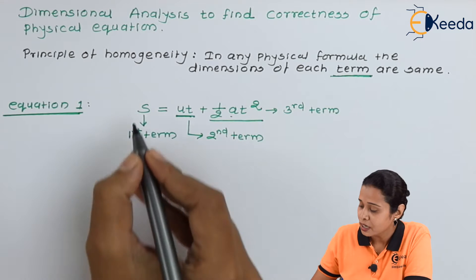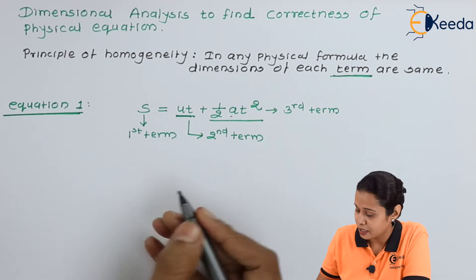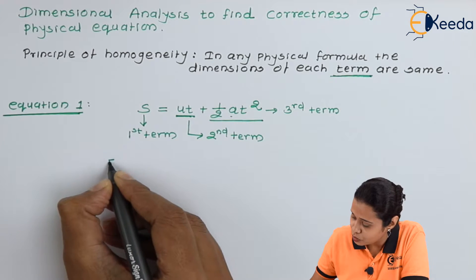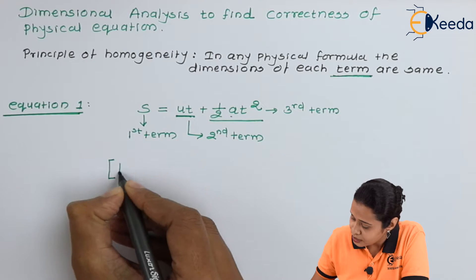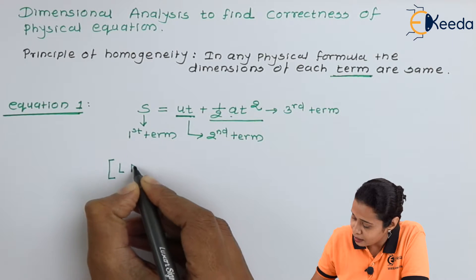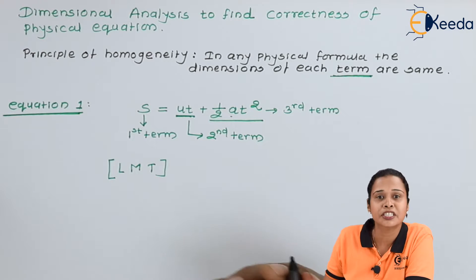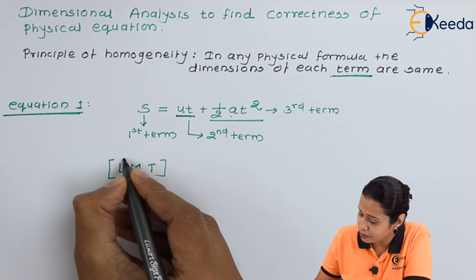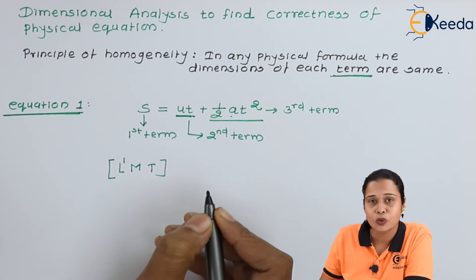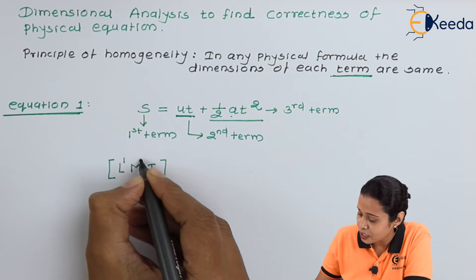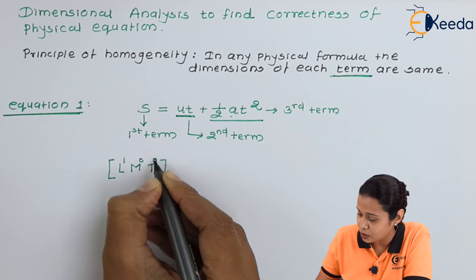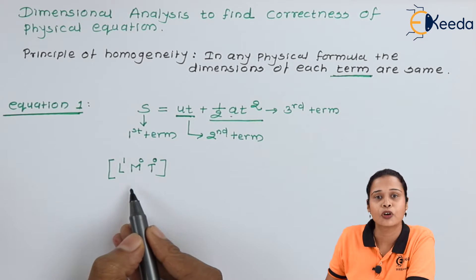Let us start with the first one. S is a displacement and we know what are the dimensions of displacement. We will write dimension that is L, M and T. Displacement we measure in the length, so this will become L1. There is no mass and time factor, so we will take M0 and T0. This is the dimension of first term.